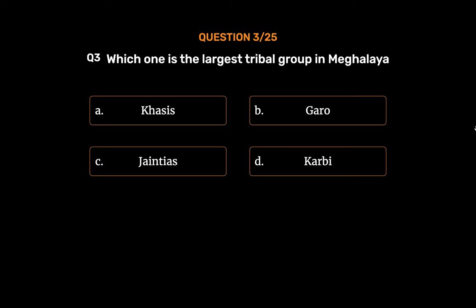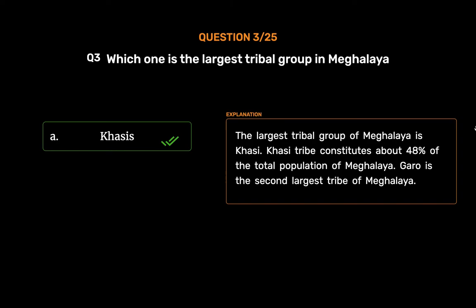The correct answer is Option A: Khasis. The largest tribal group of Meghalaya is Khasi. The Khasi tribe constitutes about 48% of the total population of Meghalaya. Garo is the second largest tribe of Meghalaya.